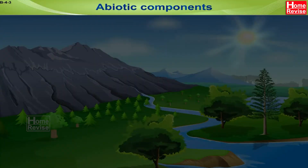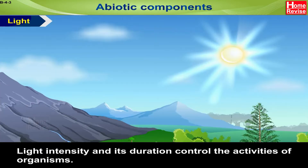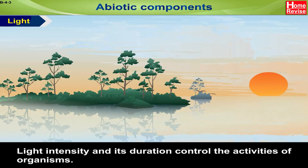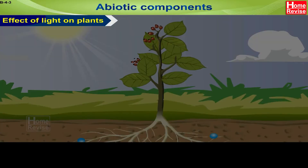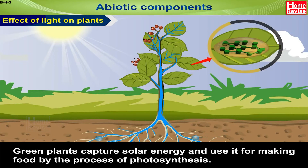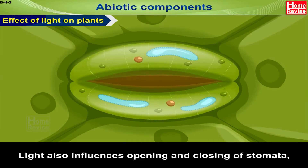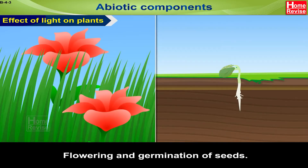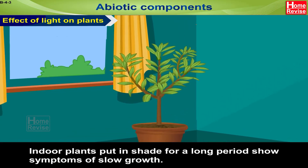Abiotic components — Light: The sun is the ultimate source of light on Earth. Light intensity and its duration control the activities of organisms. Green plants capture solar energy and use it to make food by the process of photosynthesis. Light also influences the opening and closing of stomata, flowering, and germination of seeds. Indoor plants kept in shade for a long period show symptoms of slow growth.